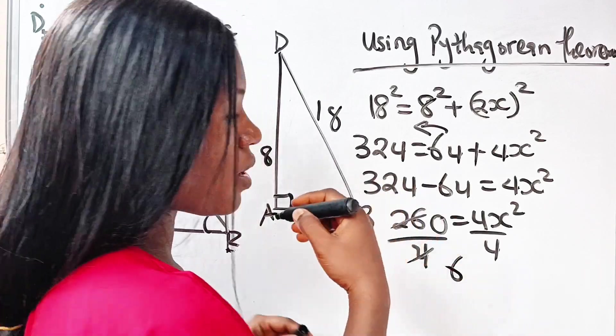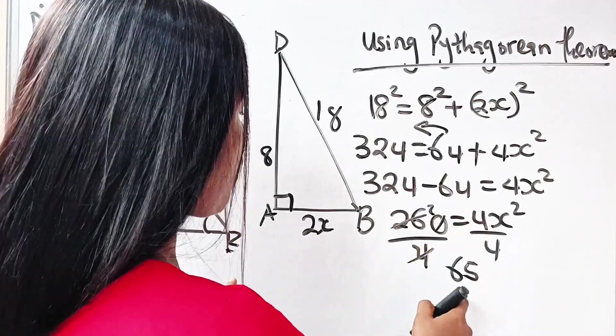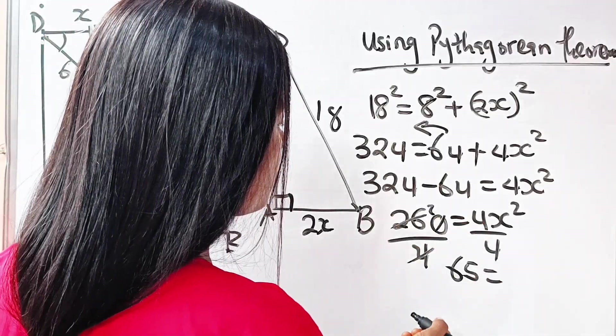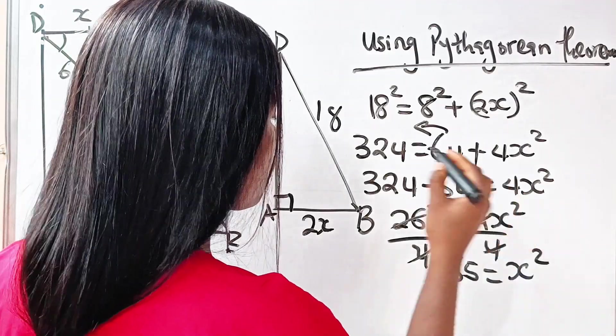4 divides this to give us 6 remainder 2, divides 20 to give us 5. So we have 65 is equal to—4 divides itself to give us 1, 1 times x squared is x squared.